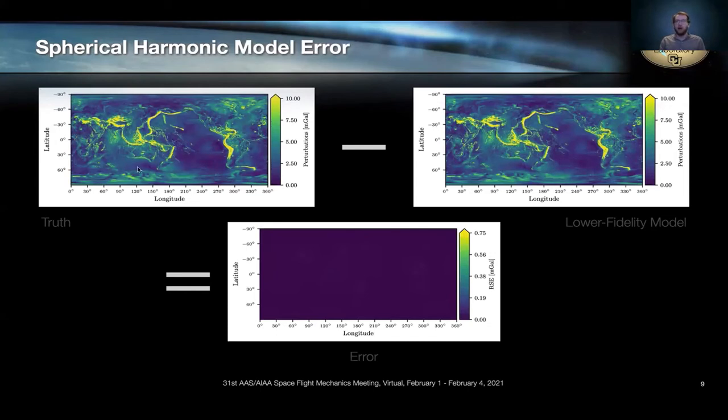So to look at this more closely, we do a bit of a qualitative experiment here. So on the left, I have the ground truth gravity field beyond J2. And on the right, I have the lower fidelity spherical harmonic representation. Now, in this case, the models are the same. We look at the difference. So the error at the bottom here is zero.